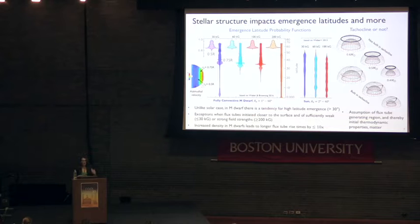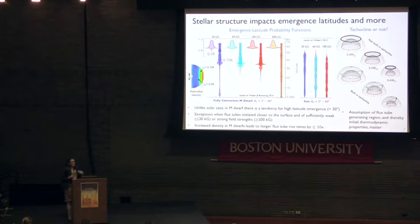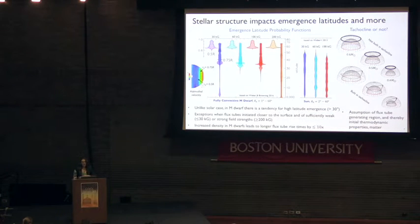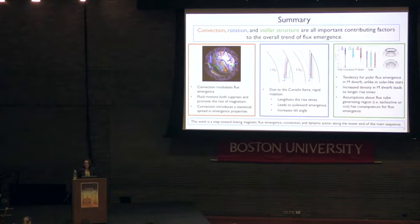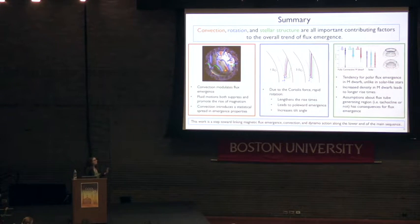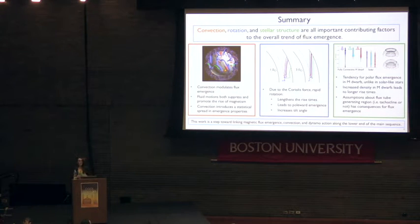The assumption of whether flux tubes are built in the tachycline affects their initial thermodynamic properties and has significant implications for subsequent evolution. Preliminary results show that flux tubes built in the tachycline rise across the convection zone much slower, emerge at lower latitudes, and tend to have a somewhat larger magnetic field strength near the surface than those built without the consideration of a tachycline. I hope I've shared some information about how convection, rotation, and stellar structure are all important contributing factors to the flux emergence process, and all of this work is a step toward linking flux emergence, convection, and dynamo action in cool stars along the lower end of the main sequence.